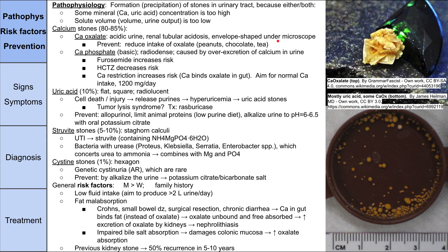To prevent calcium stones, you can do a number of things, but specifically for oxalate stones, you can reduce your intake of oxalate — a molecule found in peanuts, chocolate, and tea. The other type of calcium stone is calcium phosphate, which occurs in basic urine. These are radio-dense, meaning they show up on x-ray, which is pretty unique for stones — only one or two types show up on x-ray. They all show up on CT, which we'll talk about later.